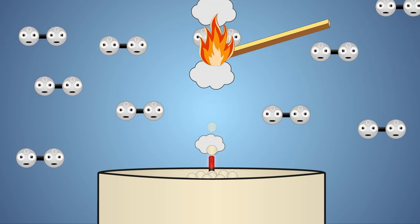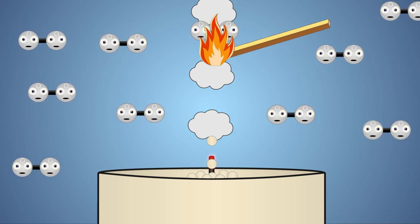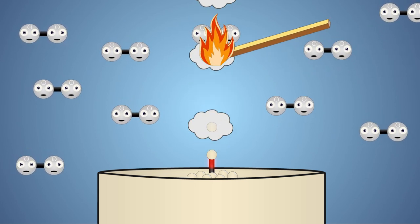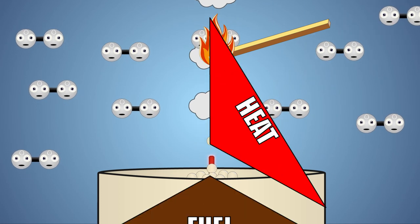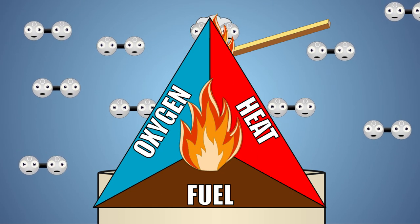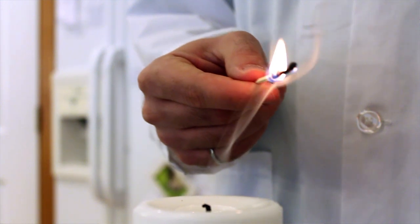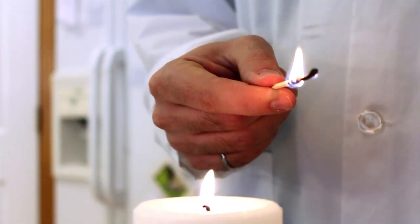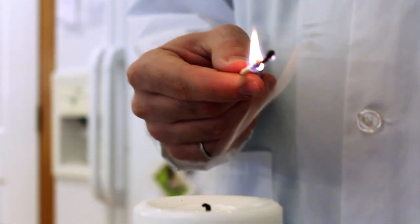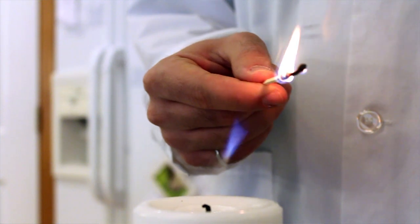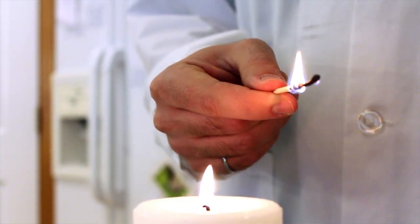When we reintroduce heat to the vaporized wax in the smoke trail, we then have all three ingredients for combustion: heat, fuel, and oxygen. The wax is quickly consumed in combustion, and the flame quickly follows the trail of fuel or smoke back to its source, which is the wick, giving the warm wick just enough extra heat energy to relight the candle.